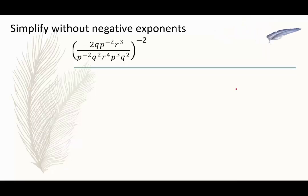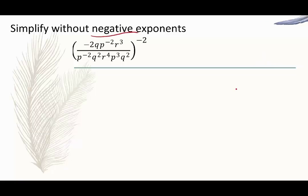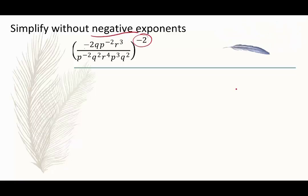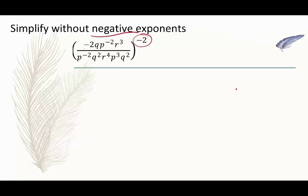In this example, we're asked to simplify without negative exponents. We have a negative exponent outside of the bracket. Since the negative exponent affects everything inside the bracket, I'm going to turn that into a positive exponent using the negative exponent rule.